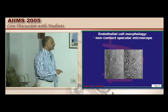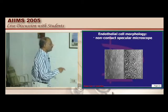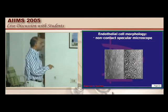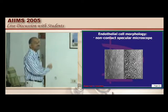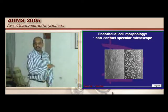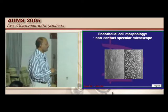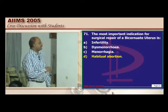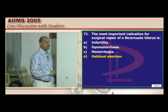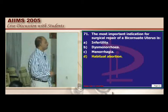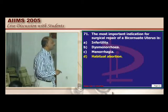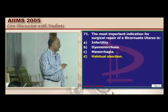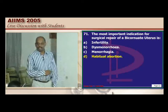The cornea has five layers from outer to inner: epithelium, basement membrane, Bowman's membrane, substantia propria, Descemet's membrane, and endothelium. These five important layers should not be forgotten. It is the endothelial cell morphology, identified by the specular microscope, that is responsible for maintaining corneal transparency.